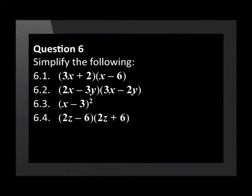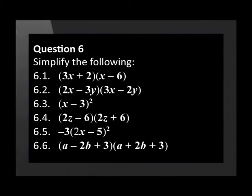6.4 is 2z minus 6 times by 2z plus 6. 6.5 is negative 3 times by 2x minus 5 squared. 6.6 is a minus 2b plus 3 times by a plus 2b plus 3.